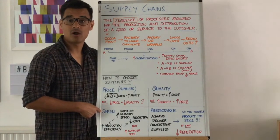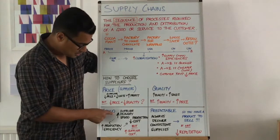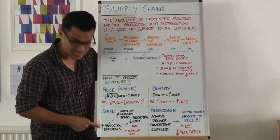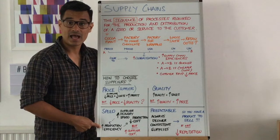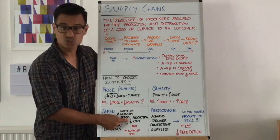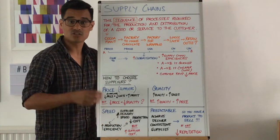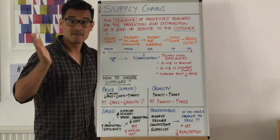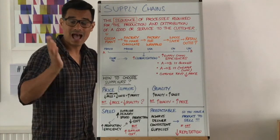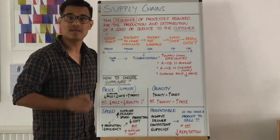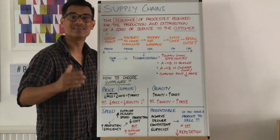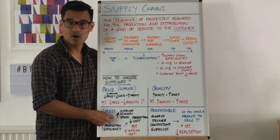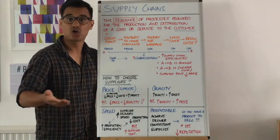Another reason why you might choose a supplier is the speed that the supplier can deliver to you. If there's an increased delivery speed — basically the supplier can get you what you need quickly — that could be great because it's going to improve the efficiency with which you produce your good or service, and it's likely to lead to lower total cost of production. There's no waiting around; your raw materials and components are turning up exactly when you need them. Your labour is always being utilised, costs are as low as possible, and profits are higher. However, if you're getting speedy delivery from your suppliers, you may have to pay more for it, so there's a higher cost from the supplier.